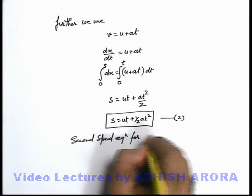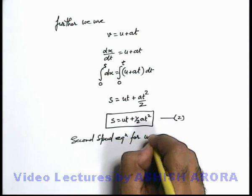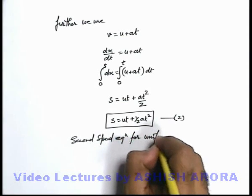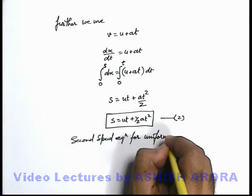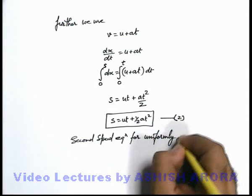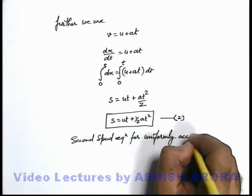This equation, which is equation number 2, gives us the displacement covered by the particle in time t if it is moving at constant acceleration a with initial velocity u. This equation we term the 2nd speed equation for uniformly accelerated motion.